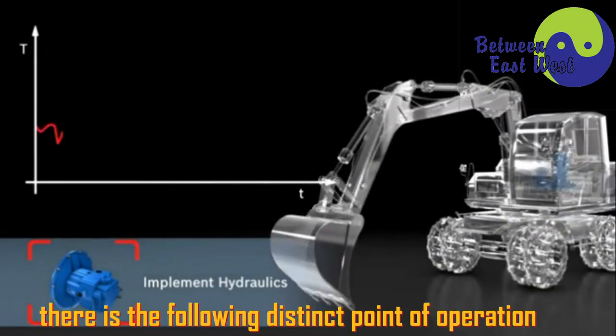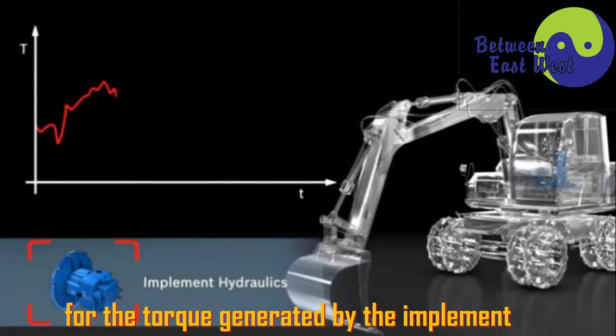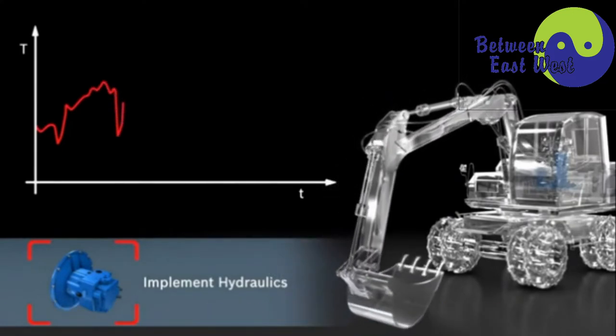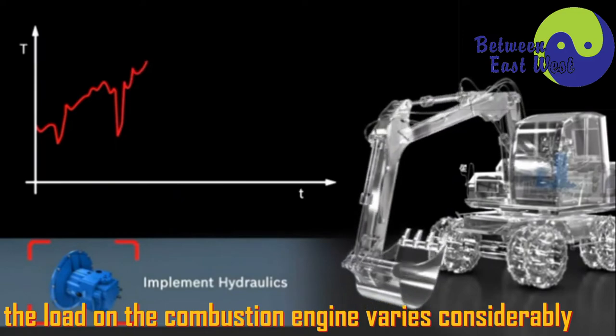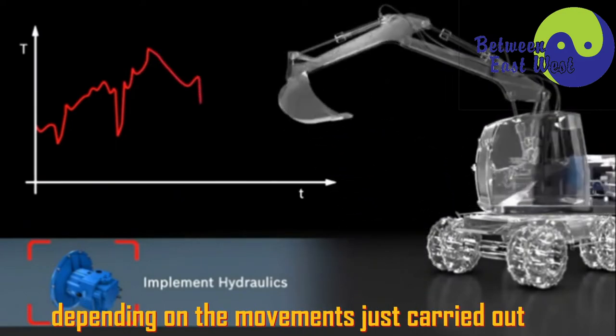There is the following distinct point of operation for the torque generated by the implement hydraulic pump. The load on the combustion engine varies considerably depending on the movements just carried out.